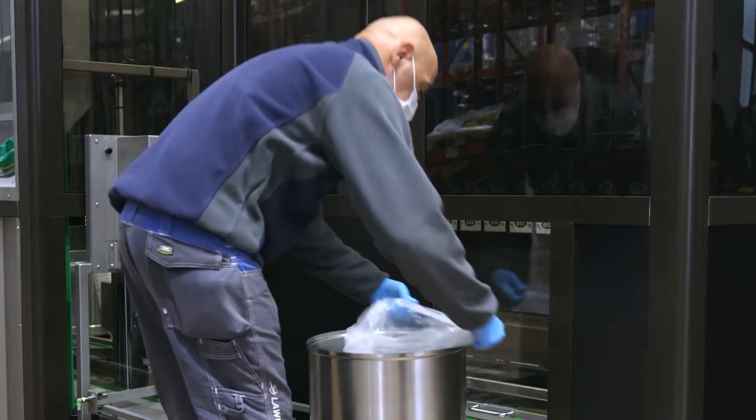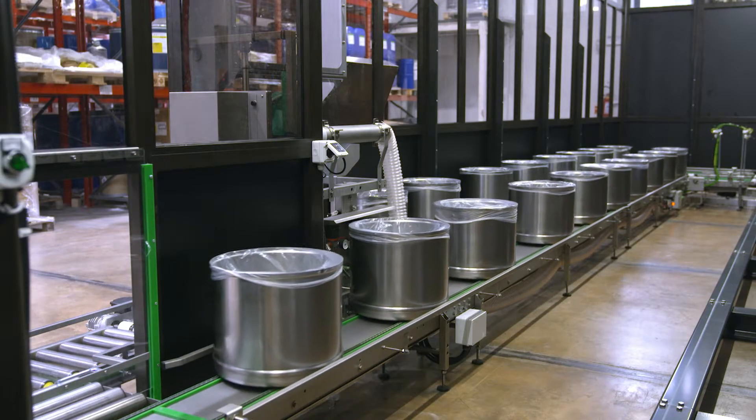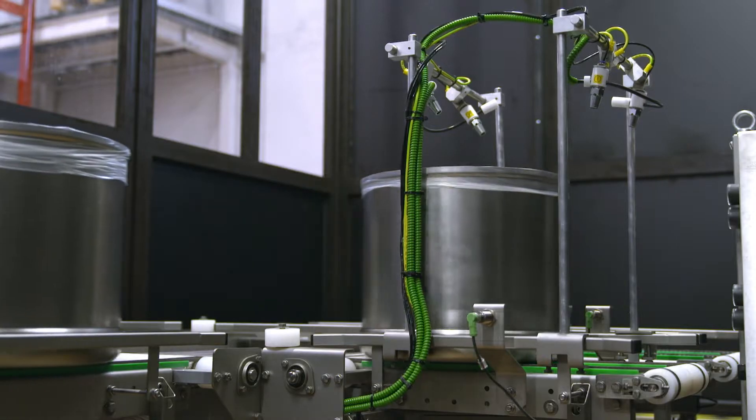The 34 litre stainless steel buckets in which the operator fits the polythene bags are loaded into the machine after passing under an ionizing system that eliminates electrostatic charges.